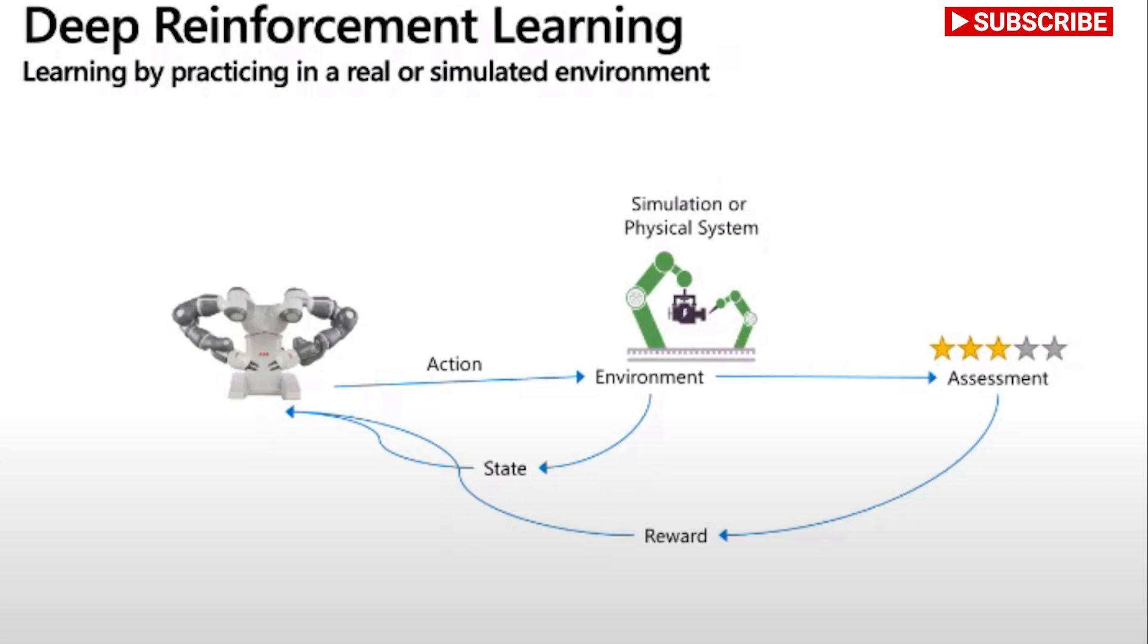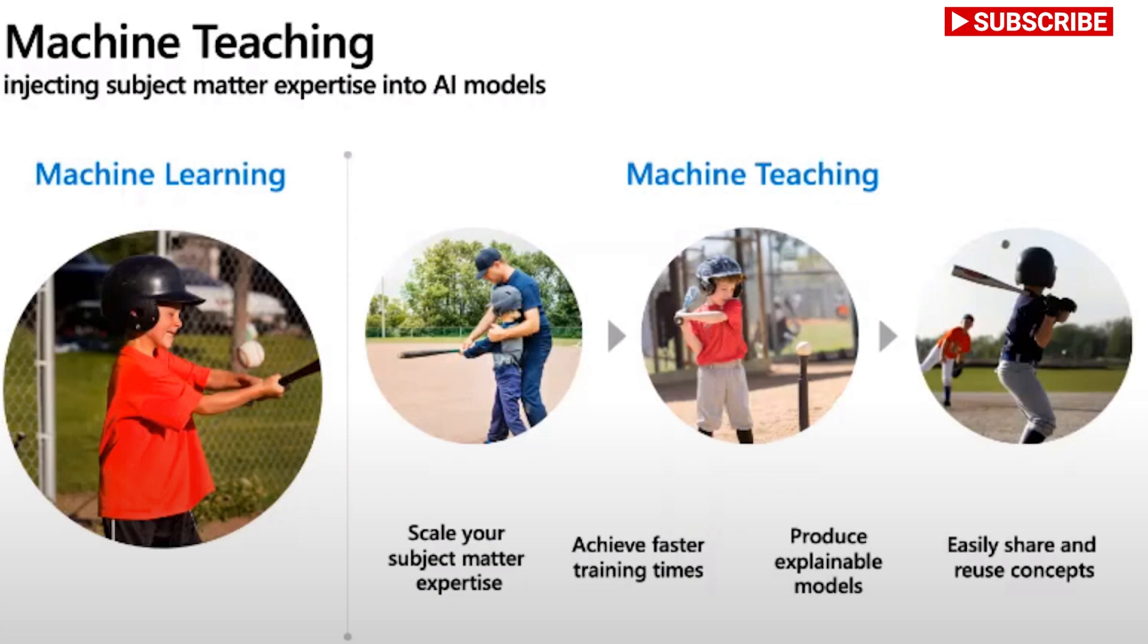That's the idea of deep reinforcement learning, and what Project Bonsai has coupled deep reinforcement learning with the technology of machine teaching. What machine teaching allows us to do is inject subject matter expertise into this AI model. What makes machine teaching different than traditional machine learning? I'd like to use an analogy here, and that is teaching a child a game such as baseball. If we were to teach a child baseball in the way that we do traditional machine learning, we would basically take that child, sit them down in front of a TV and say, okay, we are now going to play you all the major league baseball games in history.